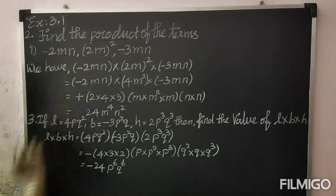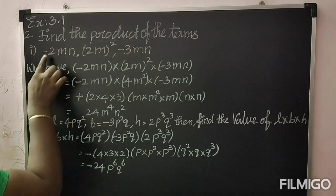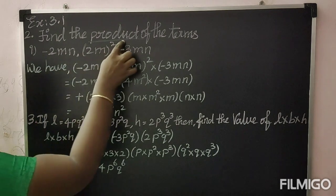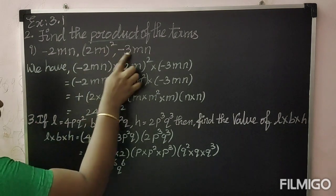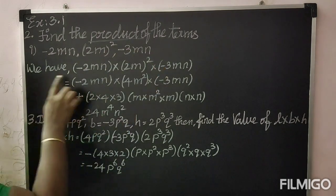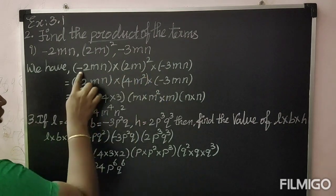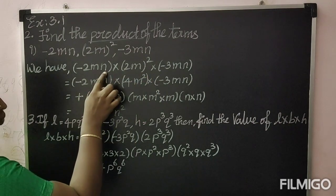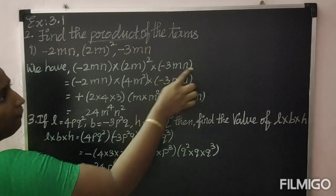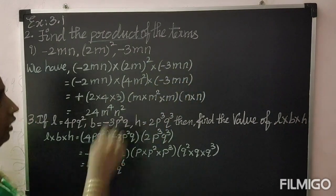We are going to multiply the given three terms: that is minus 2mn, 2m whole square, minus 3mn. So we write: minus 2mn into 2m whole square into minus 3mn.